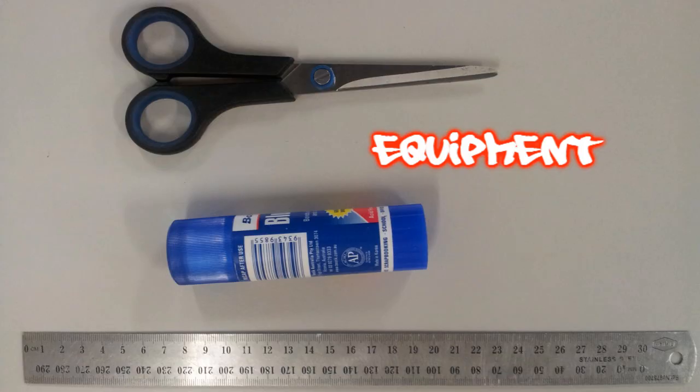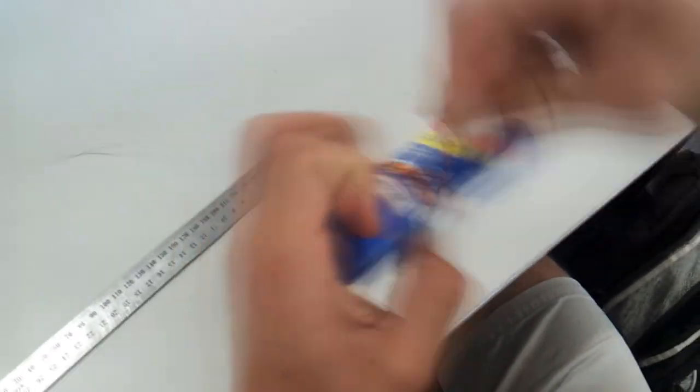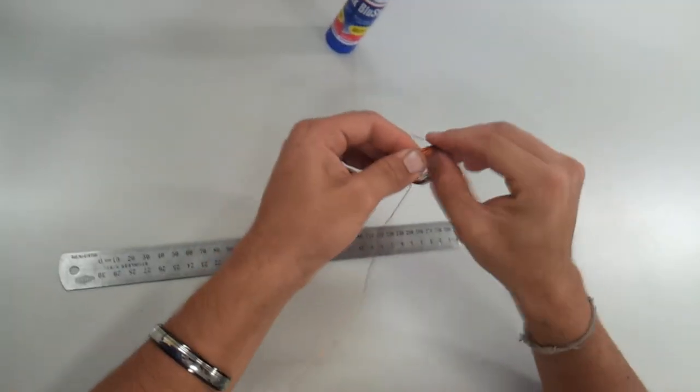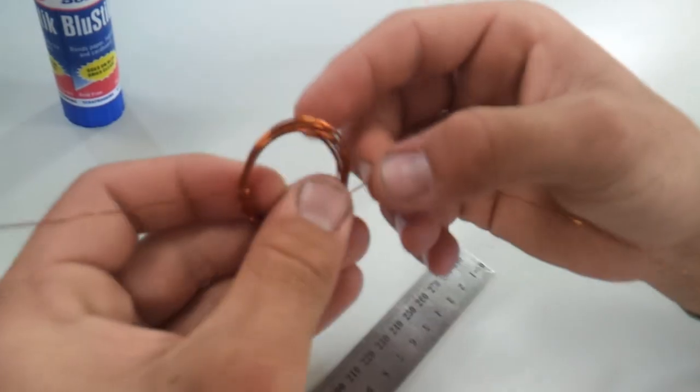Other necessary equipment is scissors, glue stick, ruler and tape. Tightly wind the copper wire to create a coil. Wind approximately 15 loops and leave 5cm of free wire at both ends. These two free ends of the wire should be 180 degrees apart when the winding is complete.